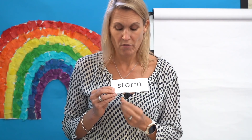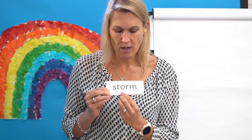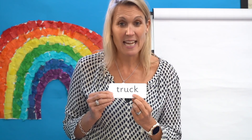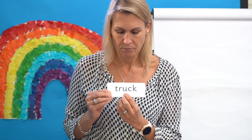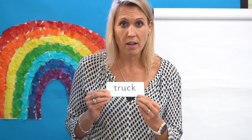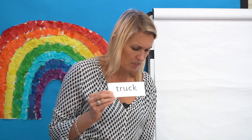Now let's read some words. Each time I want you to say the sound as I point and then blend to read the word. Can you spot the digraph? Yes, the digraph is AR. Read it with me: S-T-OR-M. Storm. The fence had been damaged in the storm. Next word — digraph? Yes, it's CK. Read with me: T-R-UH-K. Truck. Here's a truck — very important because they carry lots of deliveries.